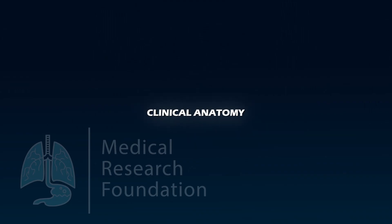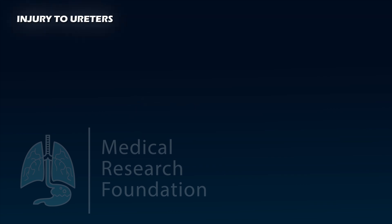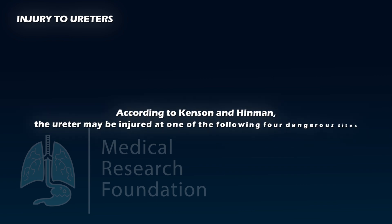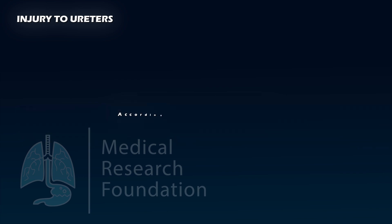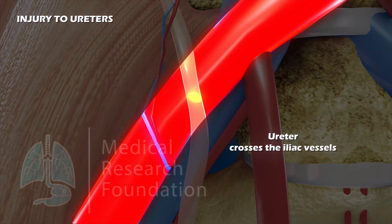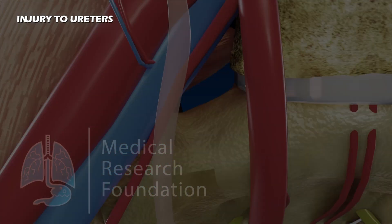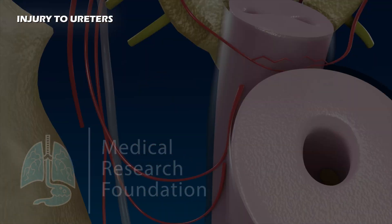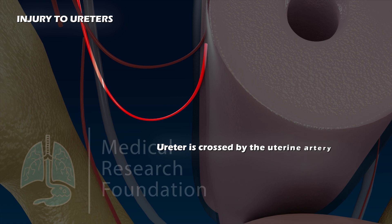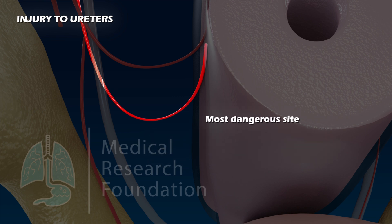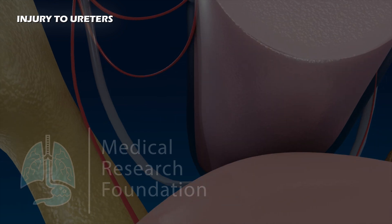Clinical anatomy — injury to ureters: according to Kensen and Hinman, the ureter may be injured at one of four dangerous sites: where the ureter crosses the iliac vessels; in the ovarian fossa where the ureter is crossed by the uterine artery, the most dangerous site as damage is likely during hysterectomy; and at the base of the bladder.